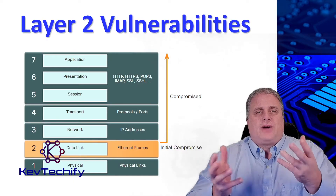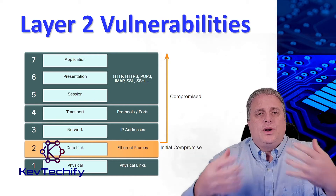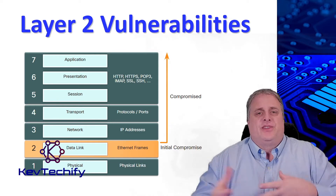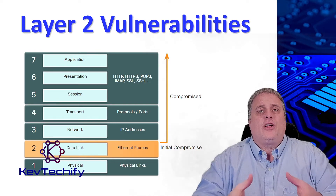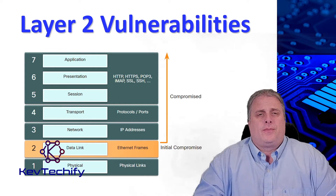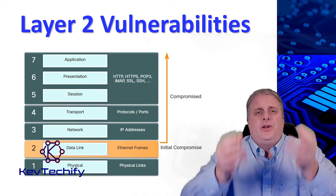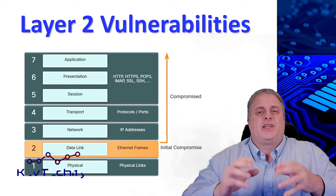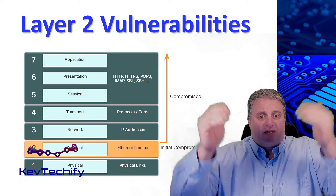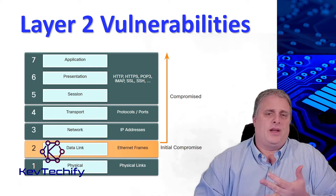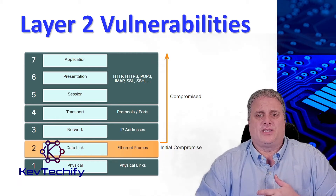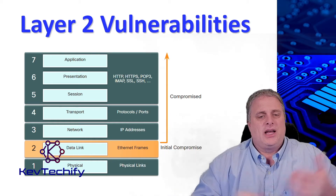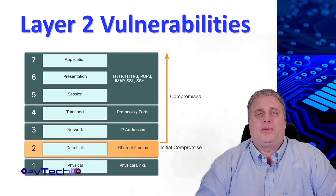The OSI model is divided into seven layers, which all work independently of each other. Each of these layers performs a specific task or function and has core elements that can be exploited. As a network administrator, you routinely implement security solutions to protect the elements in layers 3 through 7 — firewalls, VPNs, IPS devices. However, if Layer 2 is compromised, then all the layers above it are going to be compromised also.